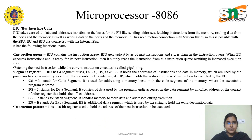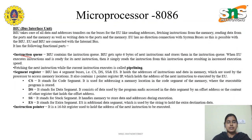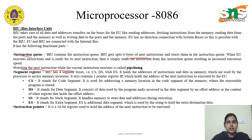Now let us discuss the Bus Interface Unit. The BIU takes care of all address and data transfers from the bus for the execution unit — sending addresses, fetching instructions from memory, reading data from ports and memory, and writing data to ports and memory. Its functional parts include the instruction queue and segment registers. The BIU fetches up to six bytes of instructions and stores them in the instruction queue. Fetching the next instruction while the current instruction is being executed is called pipelining.